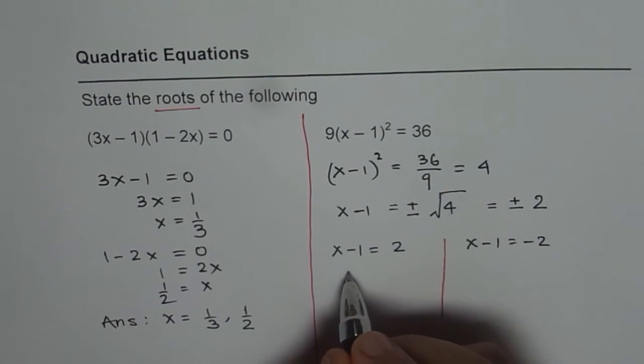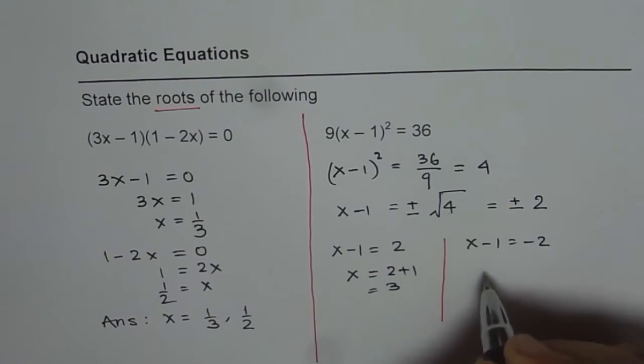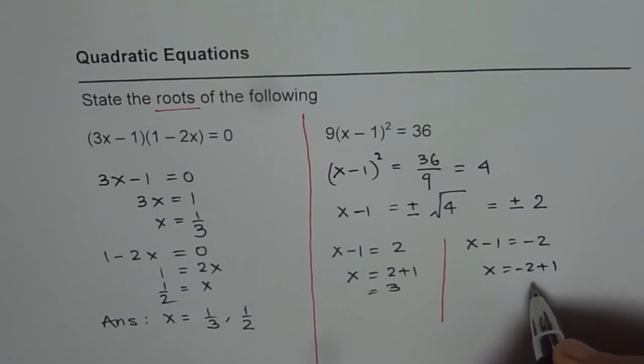Let us solve for both of them. Here we have x equals 2 plus 1, which is 3. And here we have x equals minus 2 plus 1, and that gives us minus 1.